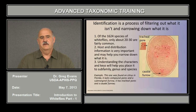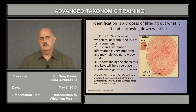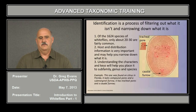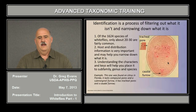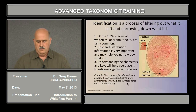Understanding the characters and keys will help you place it to subfamily, genus, and species. For example, this one was found on citrus in Florida. It has compound pores, it lacks a sub-marginal furrow, it has a caudal furrow, and with that combination of characters you may deduce that it's a Dialeurodes species.